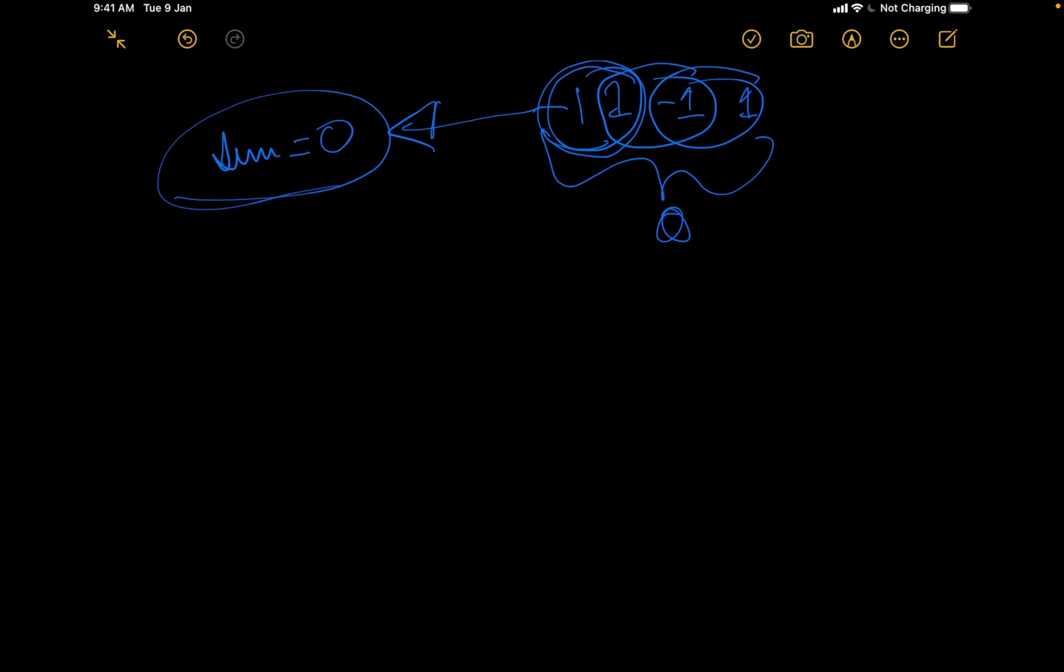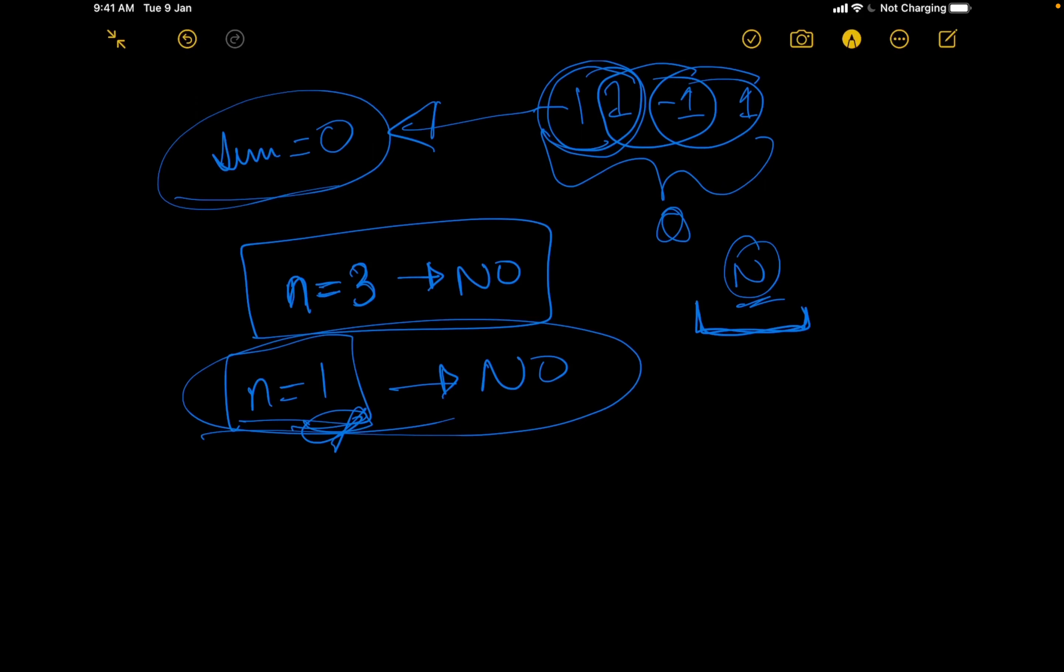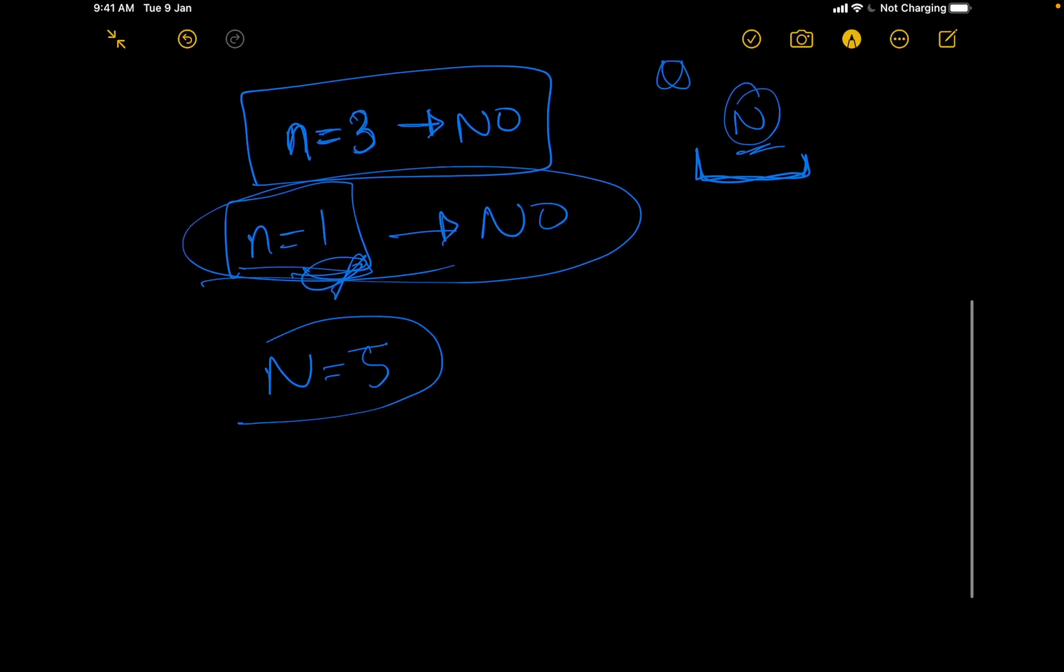However, what would happen if n is odd? Would it always be the case that the answer does not exist or could there be an answer for some n and it might not be the case for others? In the test case itself it is given that for n equals 3, the answer does not exist. So we have to print no for n equals 3. But what about n equals 1? Yeah, definitely for n equals 1 also, we will have to print no. We cannot have a pair with a single element. For n equals 3, we know the answer is no. Let us check for n equals 5. Would there be a possibility where there are 5 elements and the sum of two consecutive elements and the sum of the entire array is same? Let us try to generalize it.